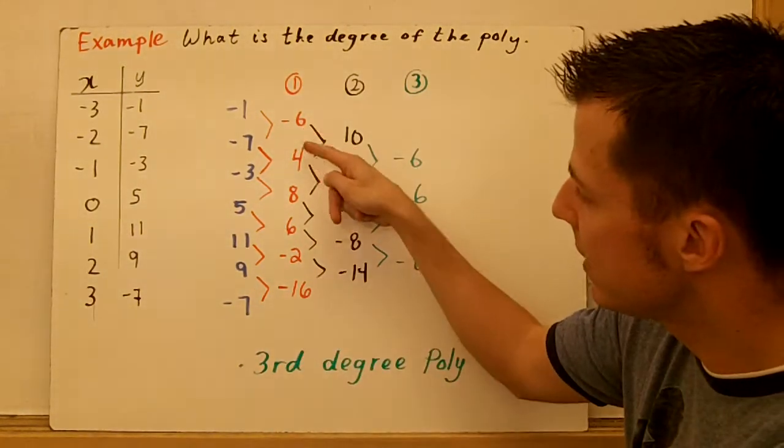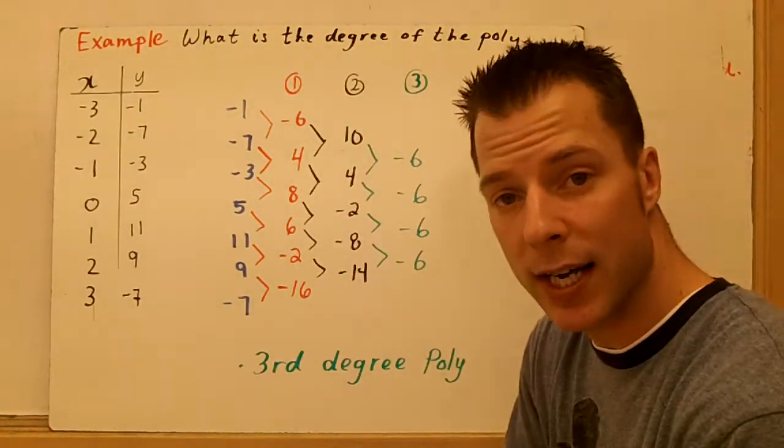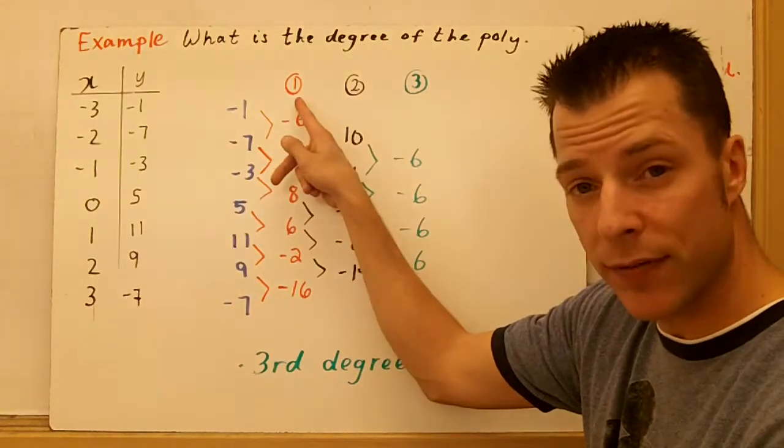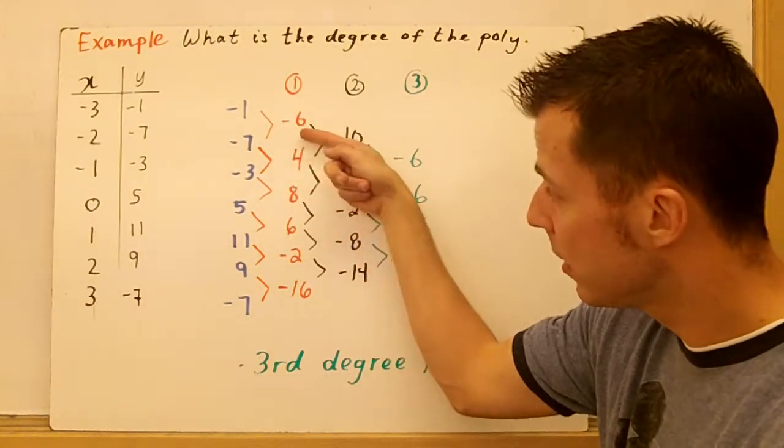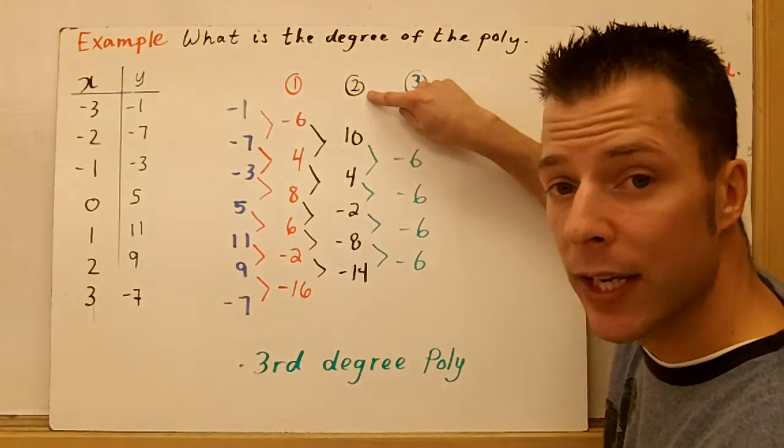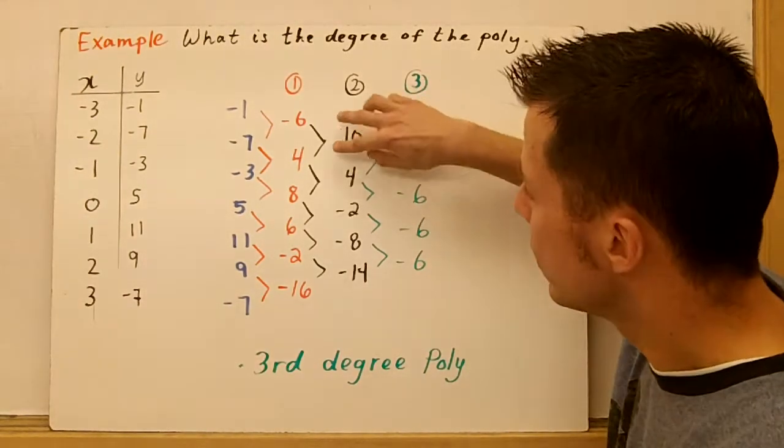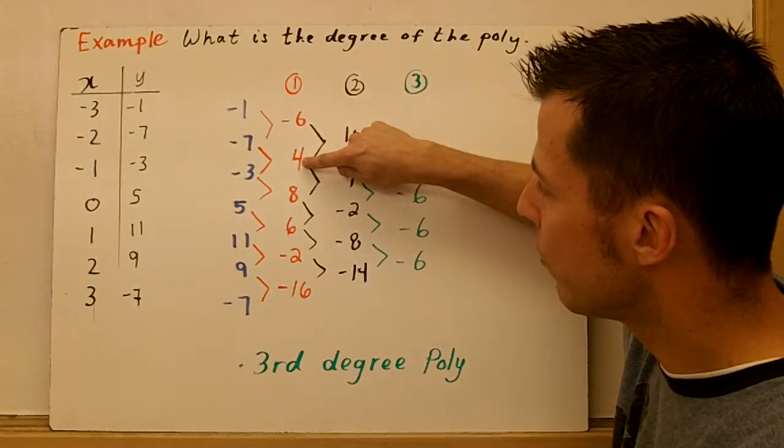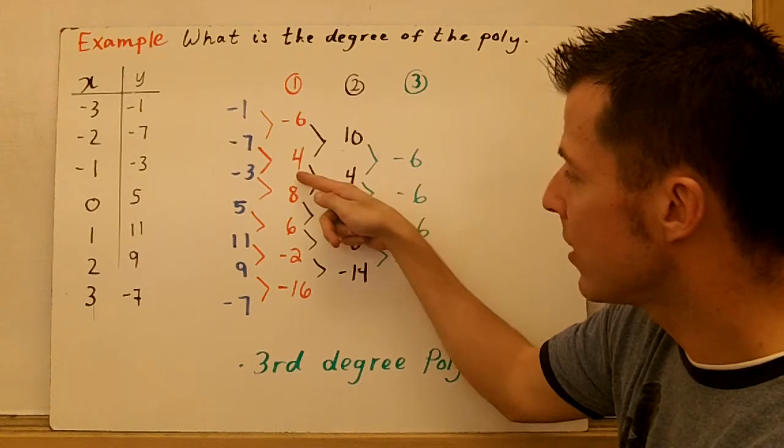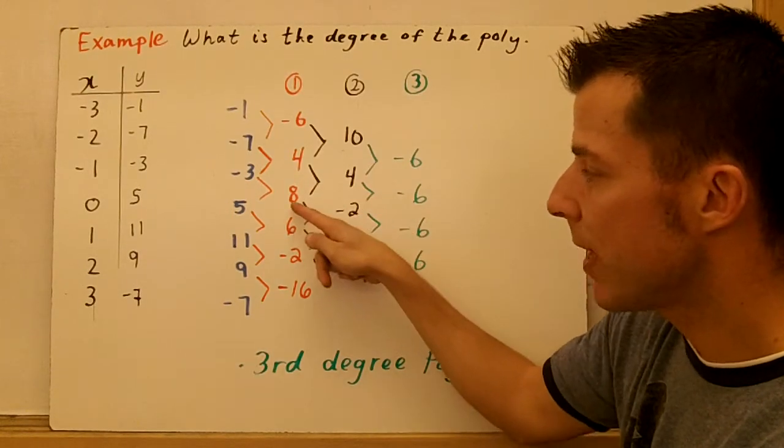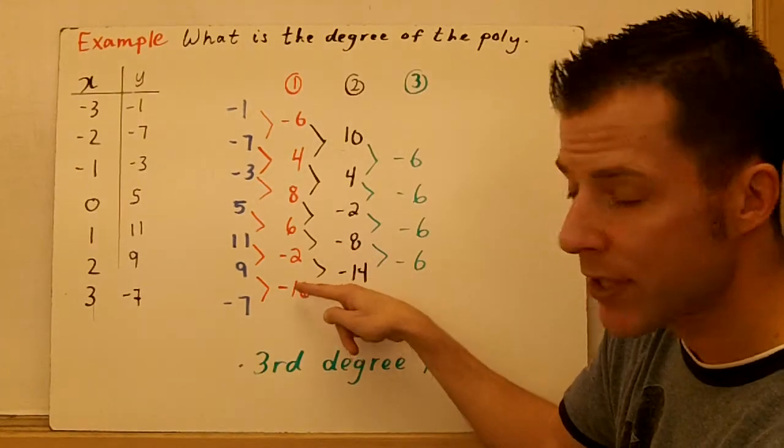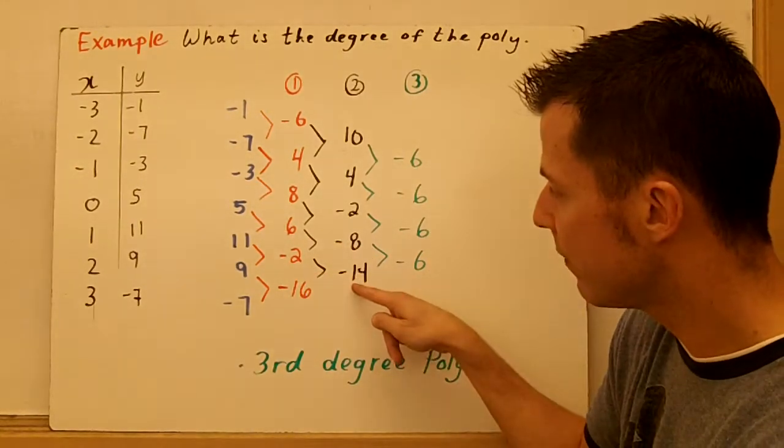Now, since these differences are not constant, we know that this is not linear. So, I took the first difference, and I don't have constants as the answers. So, this is not linear. I've got to go again. So, in black here, this is the second difference. So, again, top from the bottom. 4 minus -6 is 10. 8 minus 4 is 4. 6 minus 8 is -2. -2 minus 6 is -8. -16 minus -2 is -14.